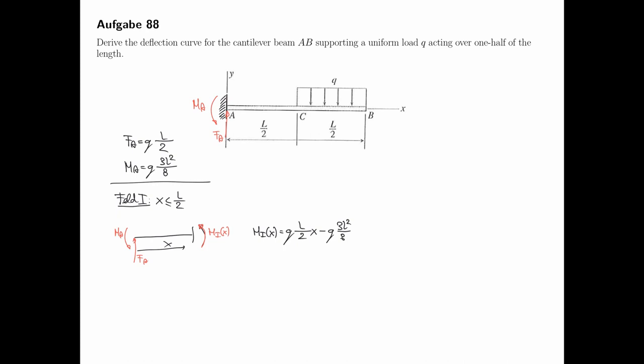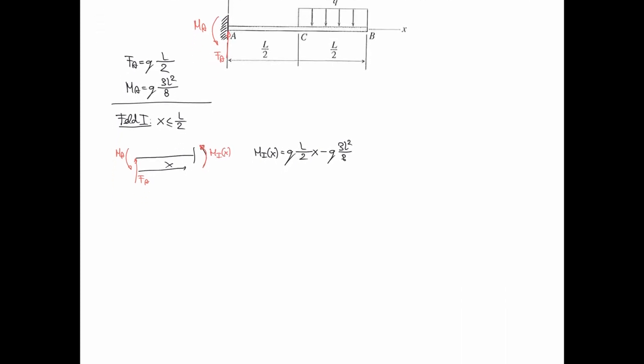Und das Feld 2 innerhalb der Streckenlast für x größer gleich L halbe. Das habe ich von rechts geschnitten und gleich wieder von links mit der Komplementärvariable. Das kennen Sie schon alles im Schlaf wahrscheinlich jetzt. Sollte liefern ein M2 von x von minus Q L Quadrat Halbe minus Q x Quadrat Halbe plus Q mal L mal x.